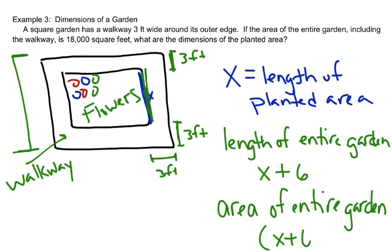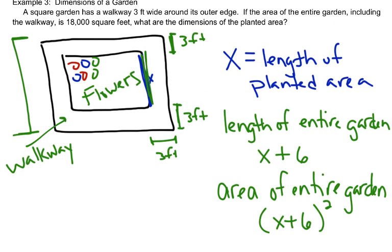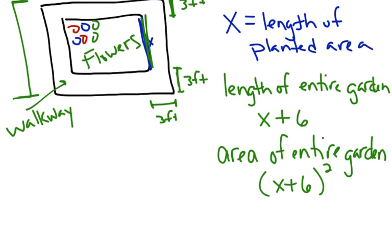In the problem, they told me that the entire garden, including the walkway, was 18,000 square feet. That must mean that X plus 6 squared must equal 18,000.